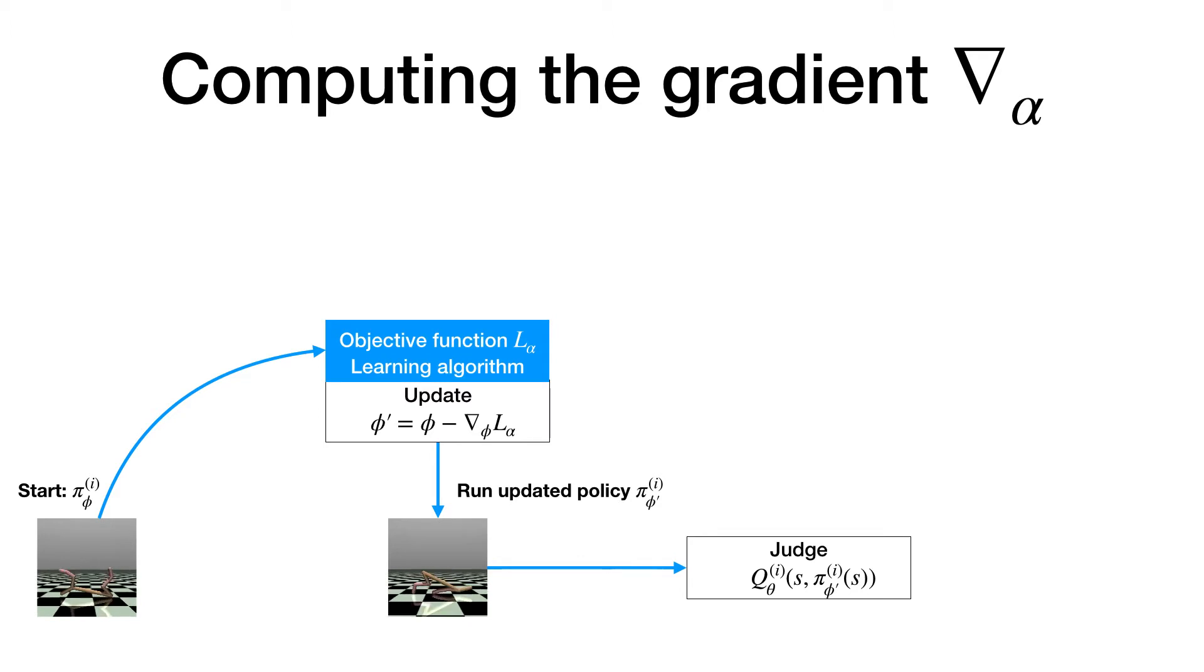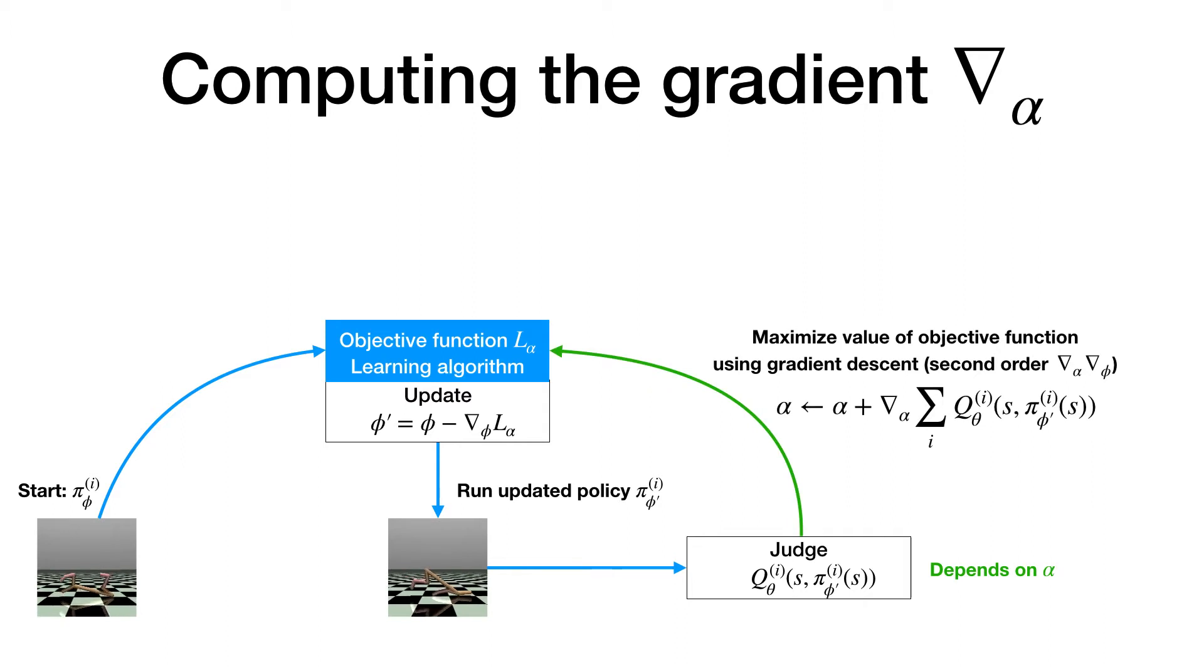Notice how, by unrolling a computational graph, the output of q is now a function of the parameters alpha of the objective function. This allows us to calculate a second-order gradient in the direction that we expect the objective function to improve most. We then repeat this procedure for each agent in the population and average the gradients to improve the objective function.